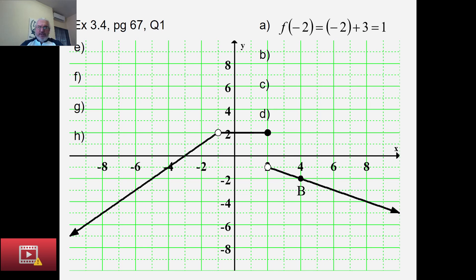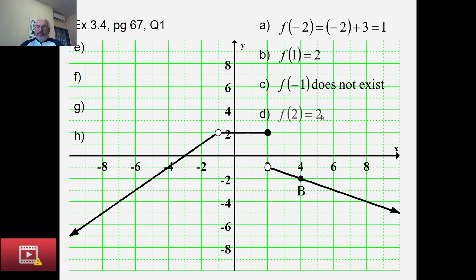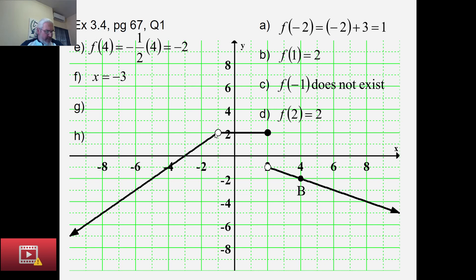The zero of the function is the x value where the function equals zero — where the graph touches the x-axis. This function has only one zero at x = −3. As x approaches −1, the function approaches the value 2. As x approaches 2 from the left, the function also has value 2, but from the right the function approaches −1. This behavior — which we will discuss more deeply when we cover limits.